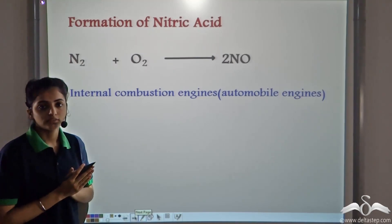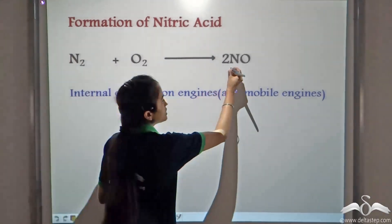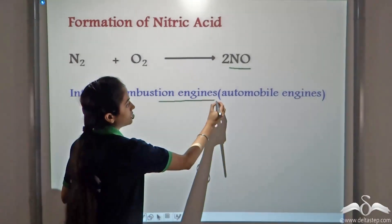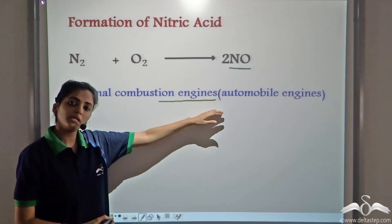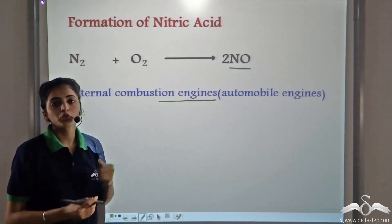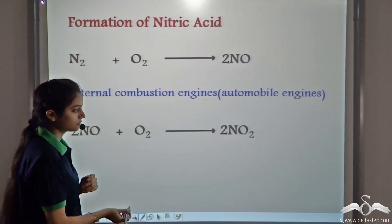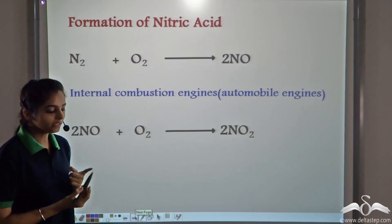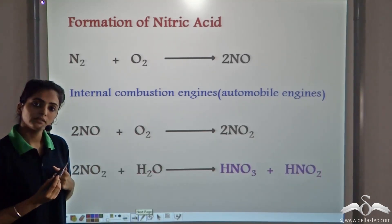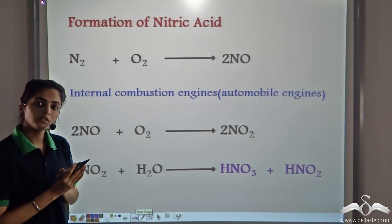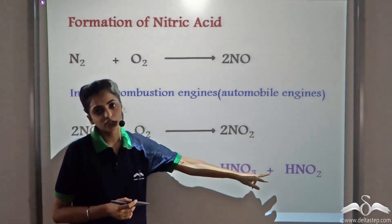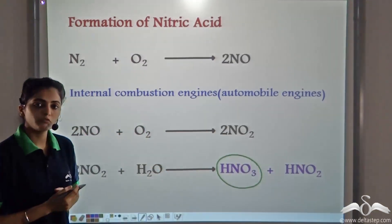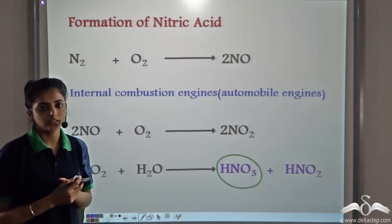The main source of the oxides of nitrogen is the combustion of internal combustion engines — the automobile exhaust. This is the major source for producing the oxides of nitrogen. Nitrogen monoxide combines with oxygen to form nitrogen dioxide, and when nitrogen dioxide combines with water in the atmosphere, it forms nitric acid and nitrous acid, with nitric acid being the major product.